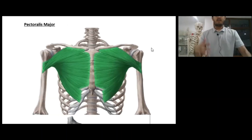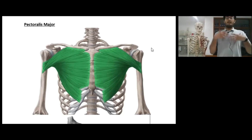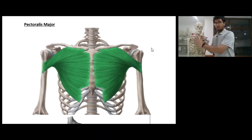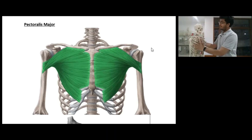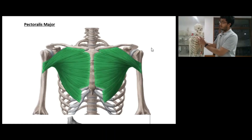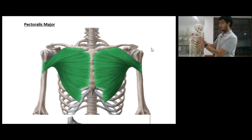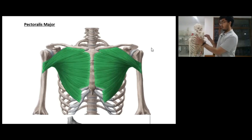It's the muscle highlighted in green. It's a bilateral muscle and it basically covers most of the anterior chest area. This is our skeleton. The pectoralis major muscle is actually situated just anterior to the rib cage over here.